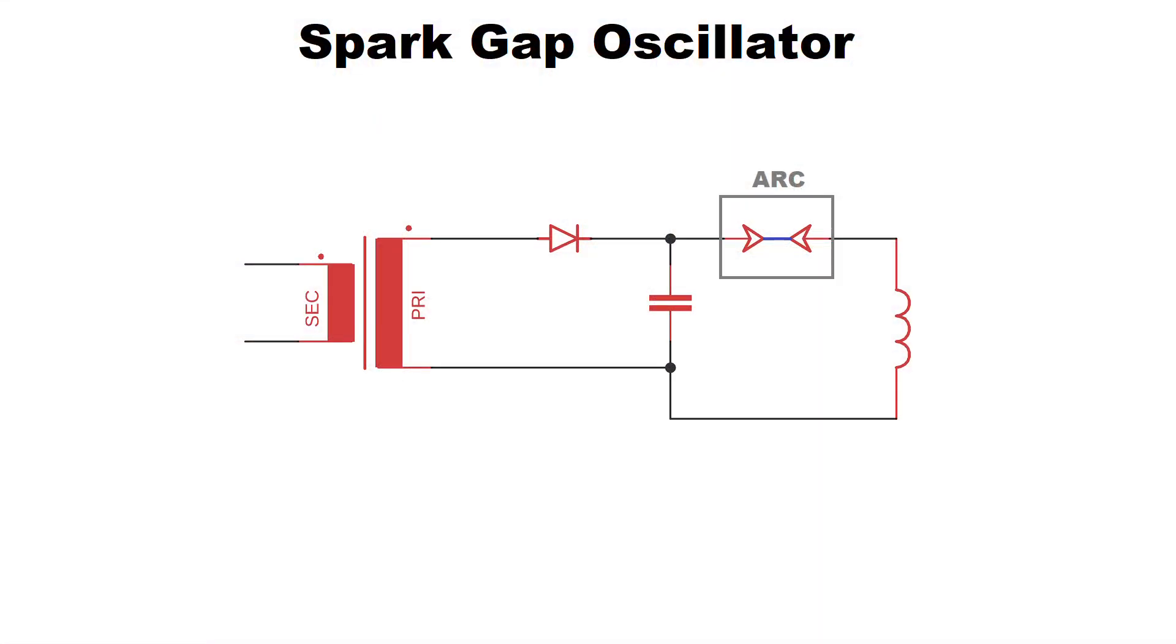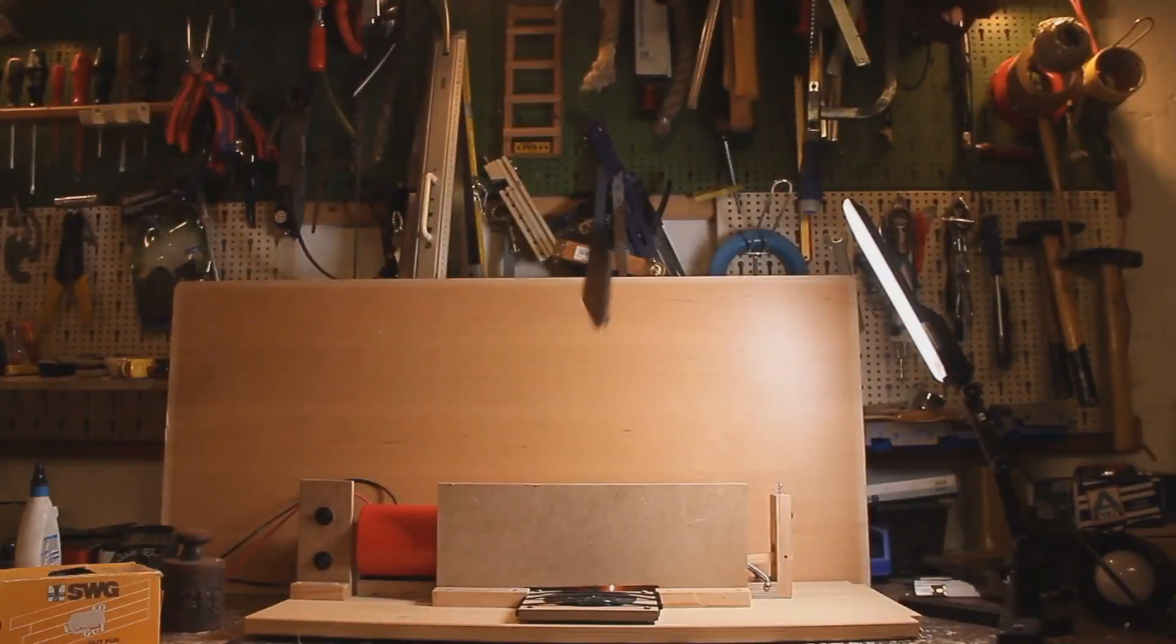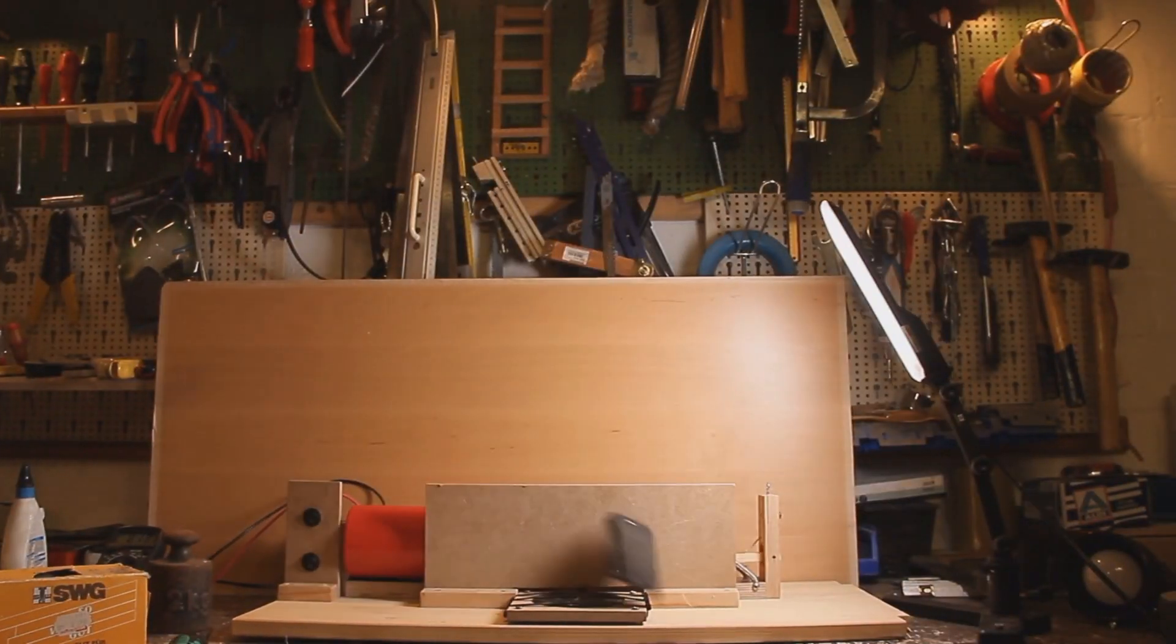The principle is the same as before. By discharging the capacitor via the coil a strong magnetic field is created. Eddy currents are induced and heat up the metal. For the coil we use this flat coil. Do you remember this coil? Let's go.